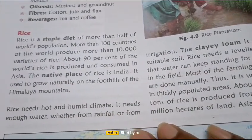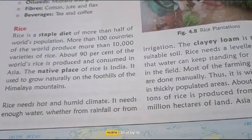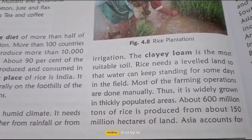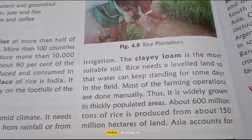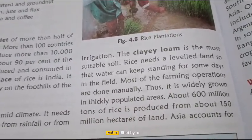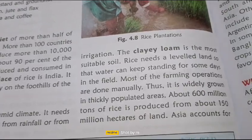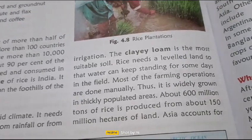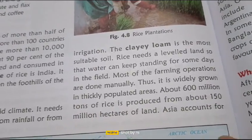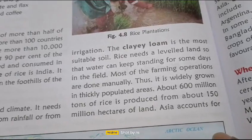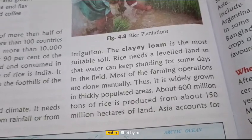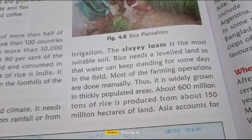Rice needs a hot, humid climate and enough water, whether from rainfall or from irrigation. The soil should be clay and loamy. Rice needs level land to grow because water needs to be standing in the field for some days. Most farming operations are done manually in India, but in several places machines are also used. Thus, it is widely grown in thickly populated areas.